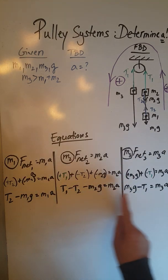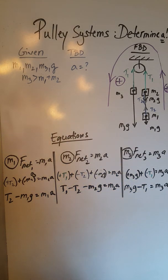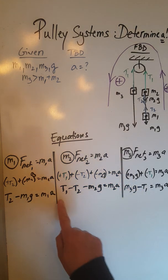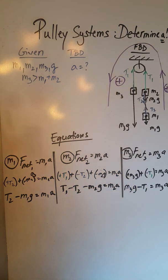It should be quite obvious that if you add up the three equations, the left-hand sides and the right-hand sides, T1 and T2 will cancel out: negative T2 here, positive T2 here, negative T1 here, positive T1 there. So let's do that—let's add up the three equations.